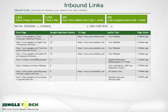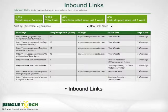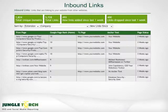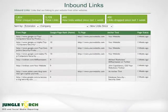To get the most from SEO, you not only need to know who you are linking to, you must also know who is linking to you. That's why Jungle Torch displays inbound links, the page rank of those links, when they were last added, and their status. Jungle Torch page rank is very important because it allows you to hone in on links that are doing the most to improve your organic SEO.